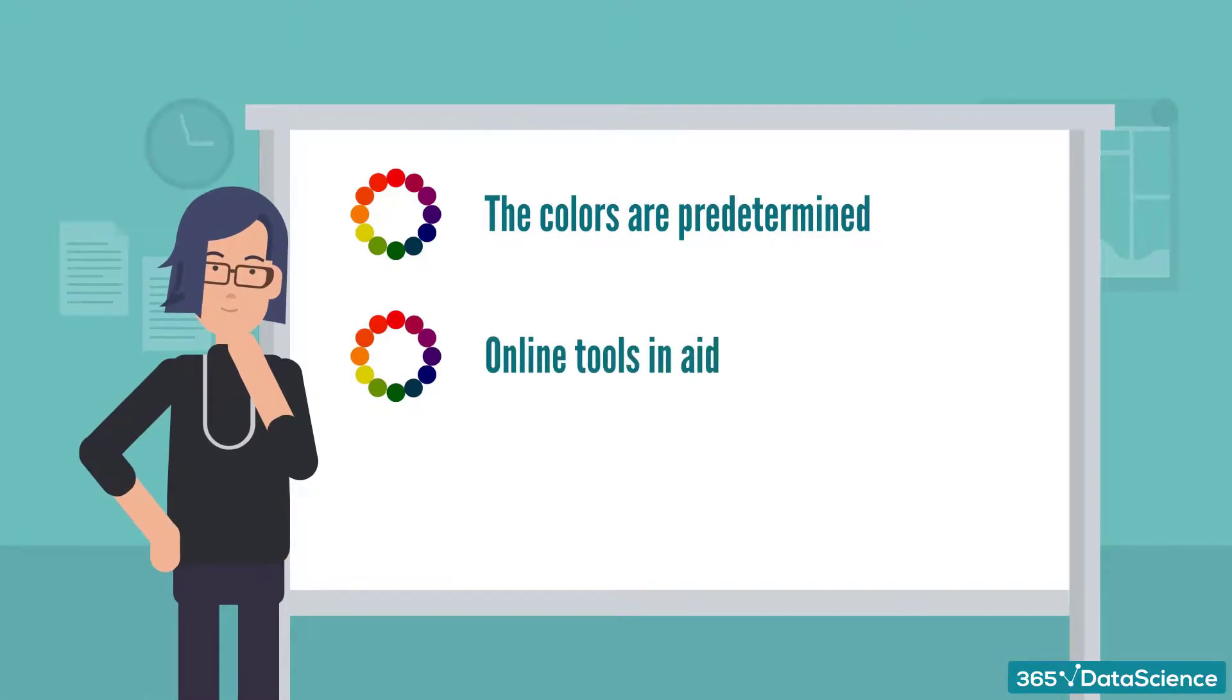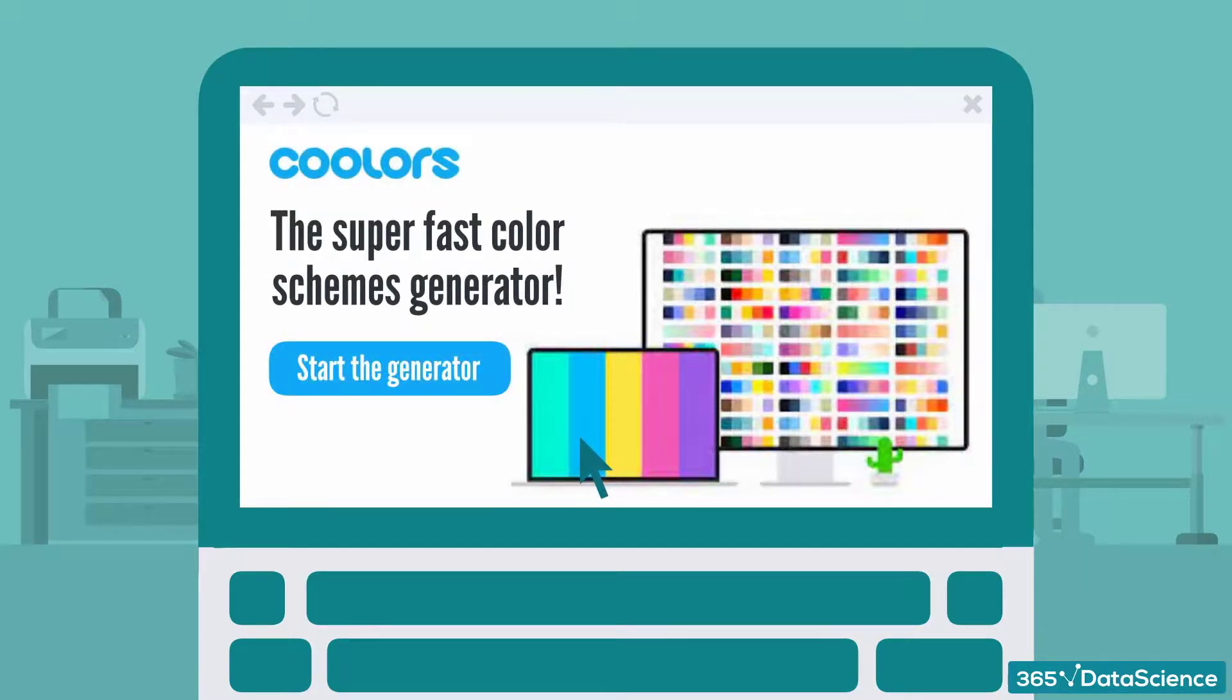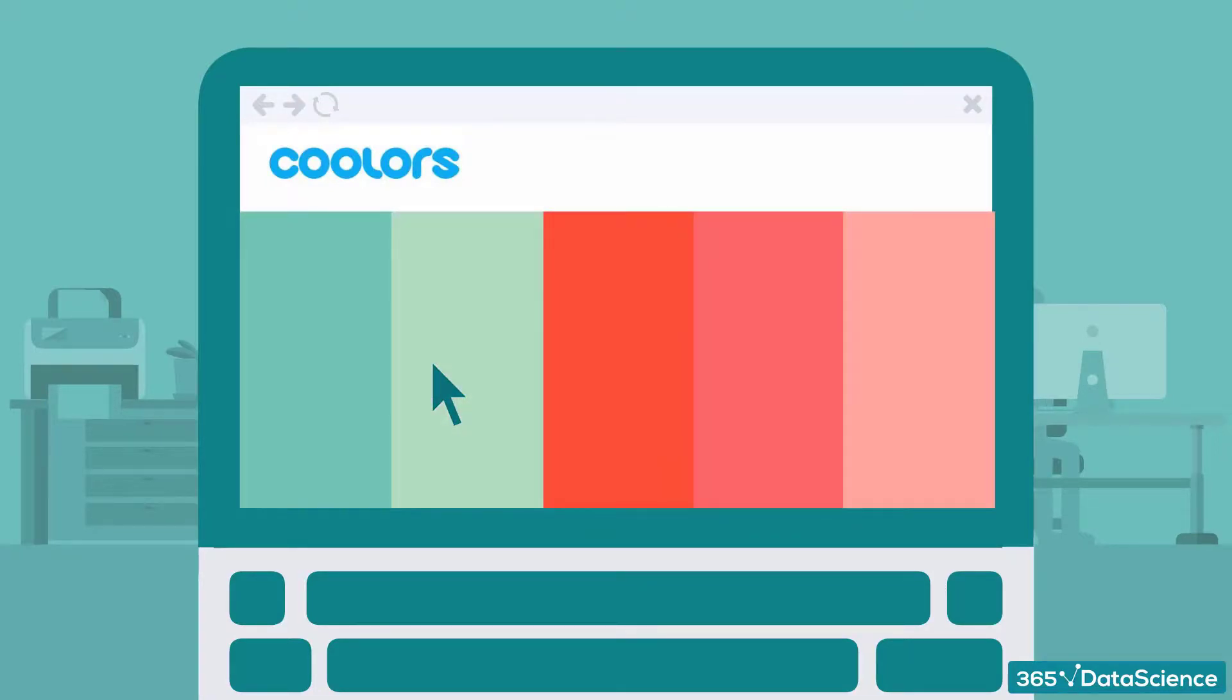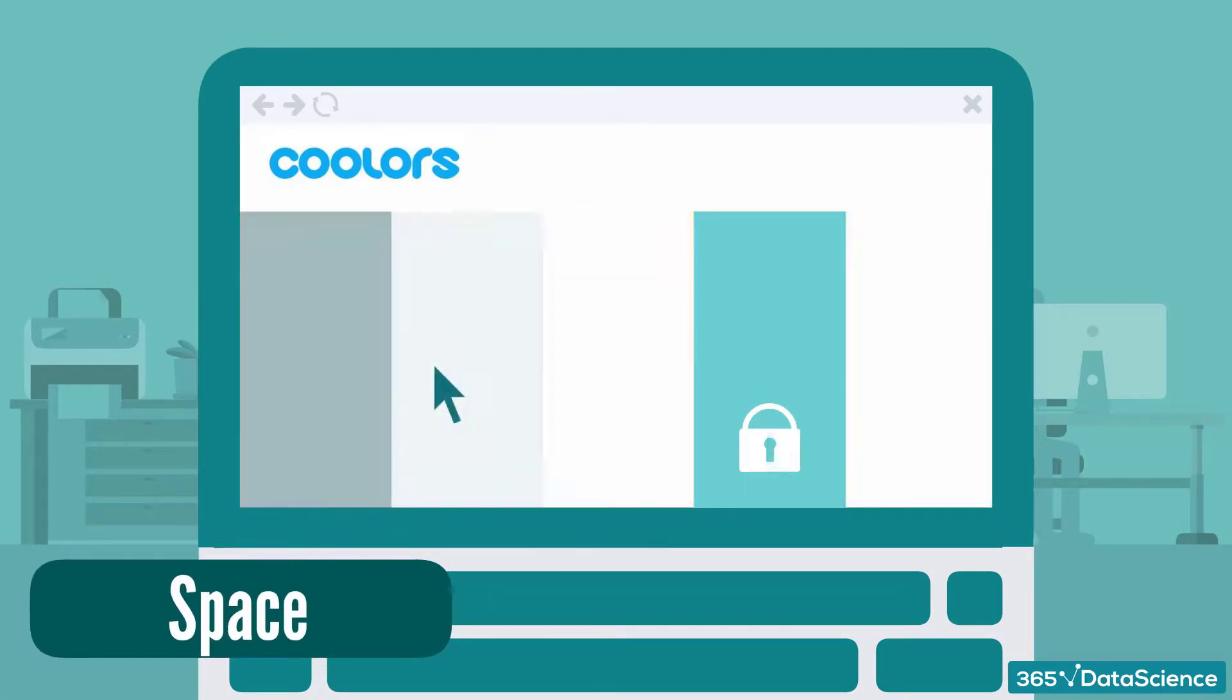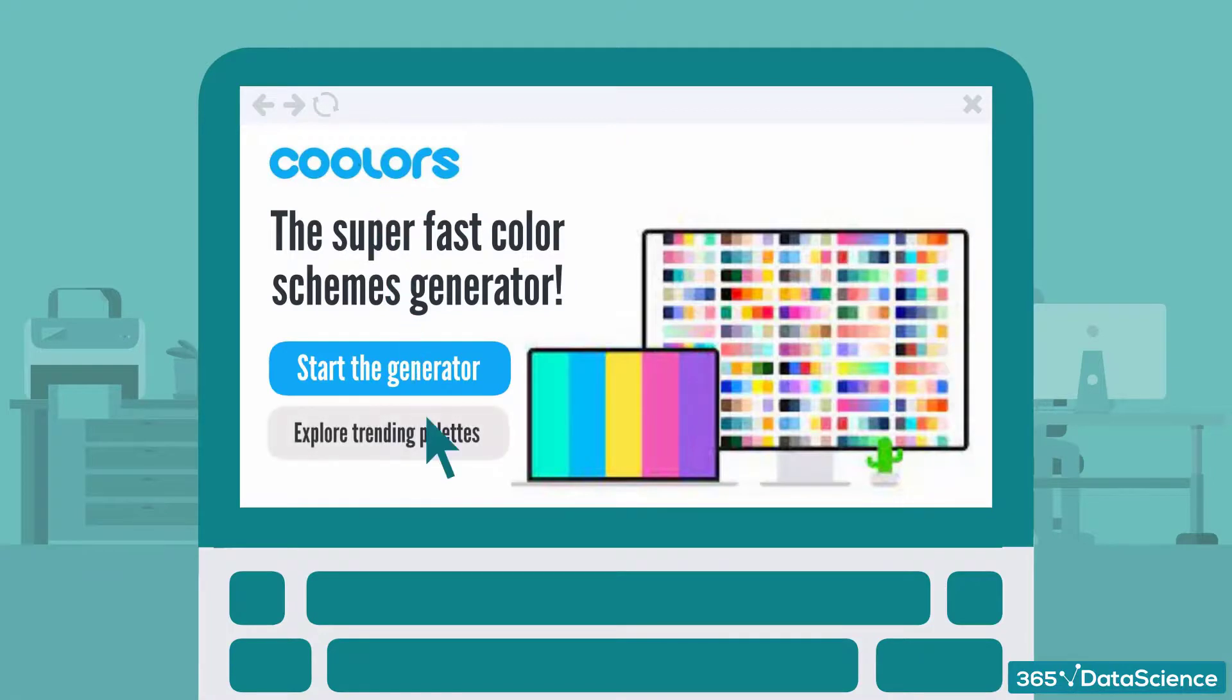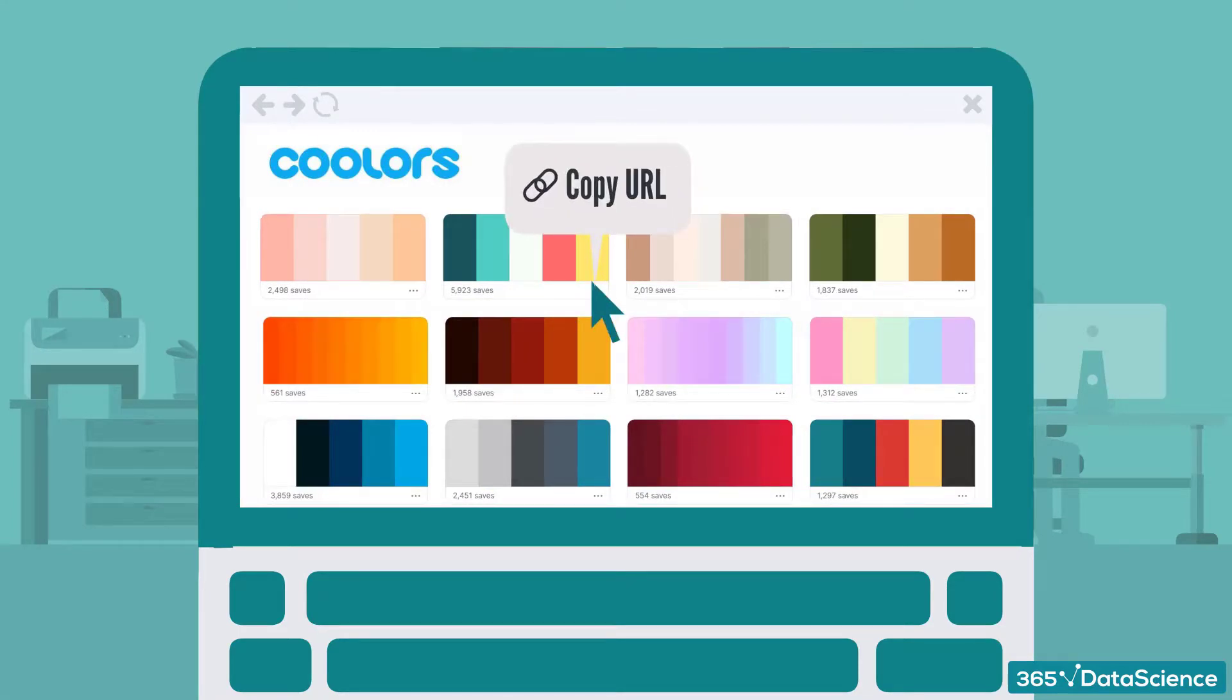Second, there are online tools that can help. Coolers.co is my favorite. I've been using it for years. Once you enter their website, you can click Start the Generator and there will be a five-color palette for you to enjoy. Pressing Space, we get a different palette. Space again, one more palette. You can generate as many palettes as you like. The best thing is that you can actually lock one or more colors and then clicking Space would generate beautiful palettes revolved around the locked colors. I won't spend any more time on that, I just want to note that from the home page of the website you can also explore trending palettes. These are some pretty neat color combinations so you can bookmark that URL for future use.